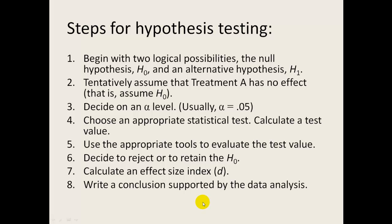Then use your appropriate tools to evaluate the test value. That's usually, for us, is always going to be table D or table C, depending on the test, where we look to see if the test value exceeds the critical values. And then you make your decision. Is there enough evidence to reject the null or must you retain it or fail to reject the null? And then, just to make sure that you understand the difference between statistical significance and practical significance, you're going to calculate an effect size index. Even if you do retain the null, SPATS has you always calculating the effect size index. And then, finally, you write a conclusion that's supported by that particular data analysis.